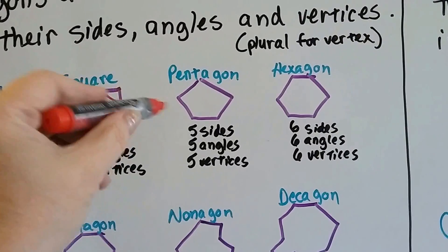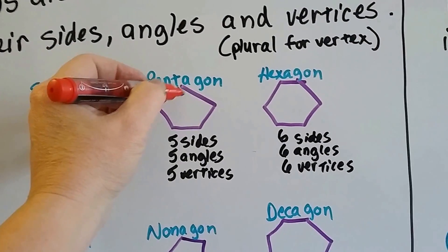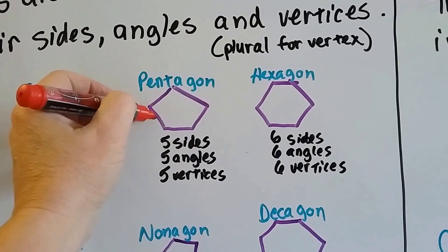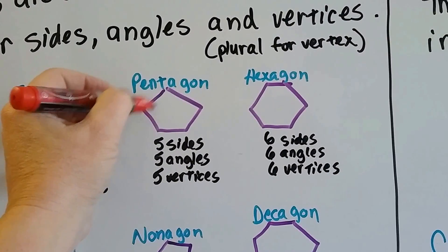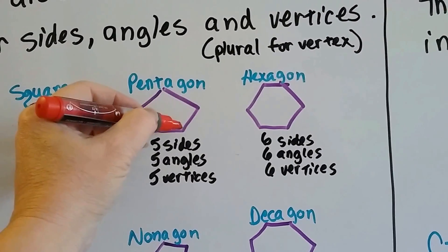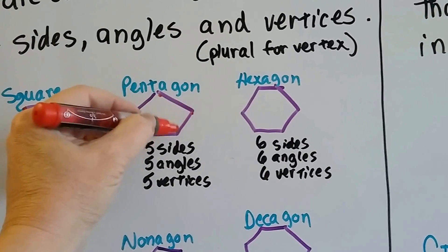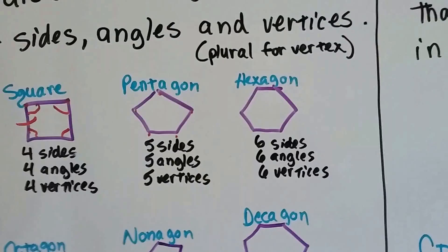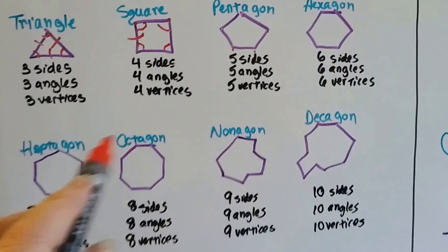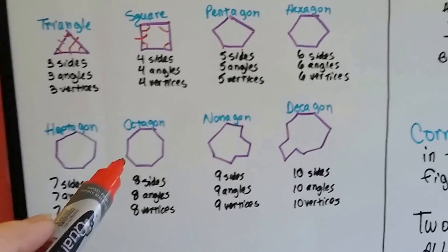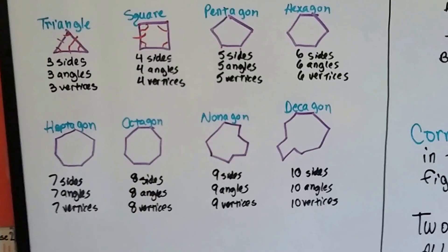A pentagon has 5 sides, 1, 2, 3, 4, 5. Five angles, 1, 2, 3, 4, and 5. And 5 vertices, 1, 2, 3, 4, 5. So each one of these has just as many sides, angles, and vertices.